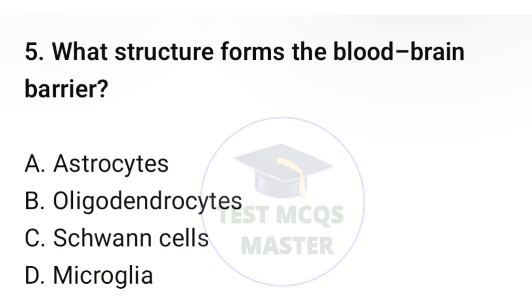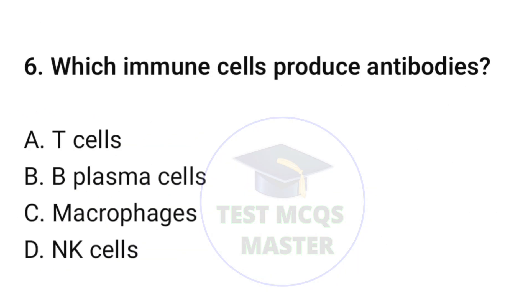Question number five: what structure forms the blood-brain barrier? The correct option is A, astrocytes. Question number six: which immune cells produce antibodies? The correct option is B, B plasma cells.